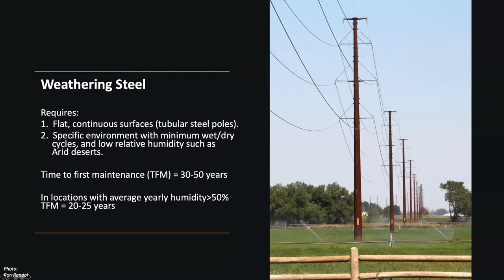This photo is interesting because it's in an irrigated field, and of course water is not good for the weathering steel surface. If water is continuously used, the structure will continue to corrode at the base. So there are issues with its use, but in a perfect environment such as an arid, very dry environment, it'll last for 30 to 50 years, maybe even more.